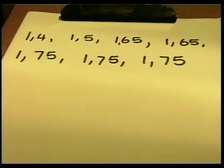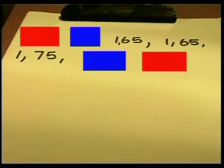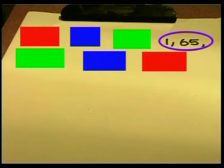Now can you see which value is in the middle of your list? One way to do this is to cover the two end numbers, then going towards the centre, cover the next two, and then the next two, until you're left with a number in the middle. So in this case, 1.65 is our median.